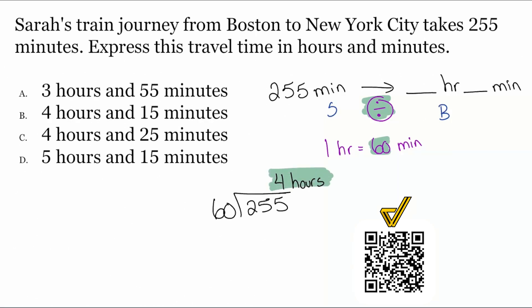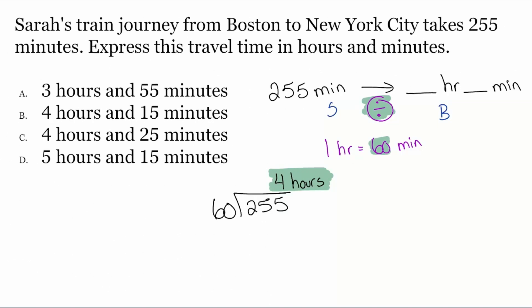Now we need to understand what the number of remaining minutes are. 60 times four is going to be 240. And when we subtract 255 minus 240, that's a remainder of 15. 15 remaining — what units should we use there? Correct. Minutes. 15 remaining minutes.